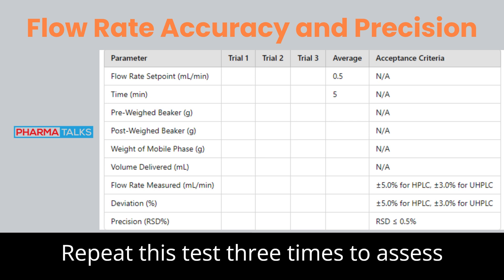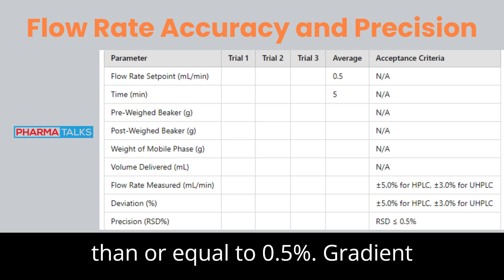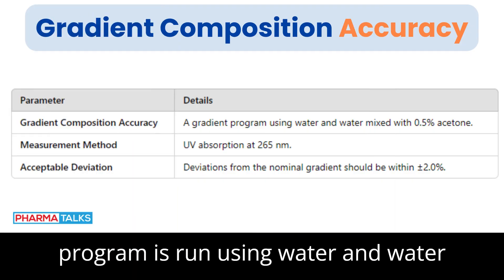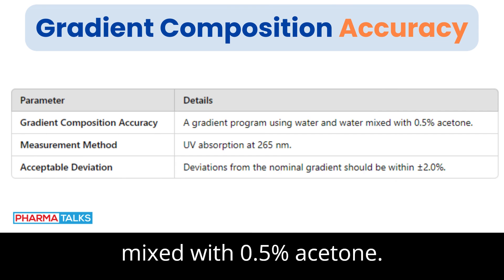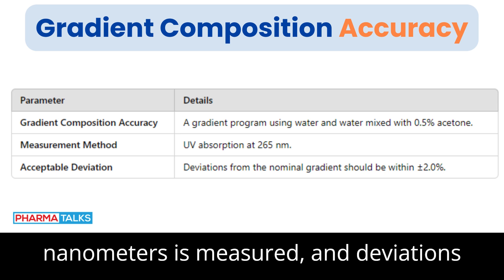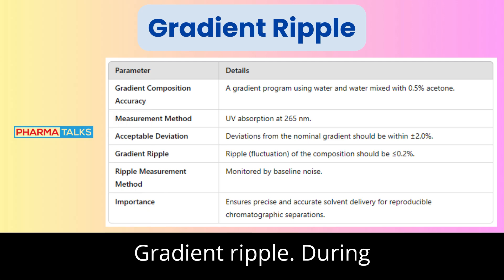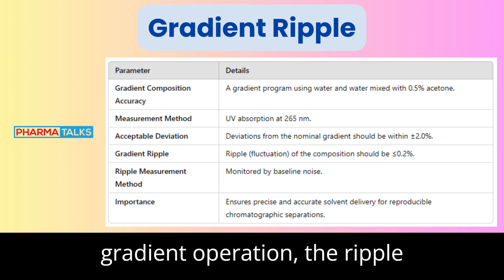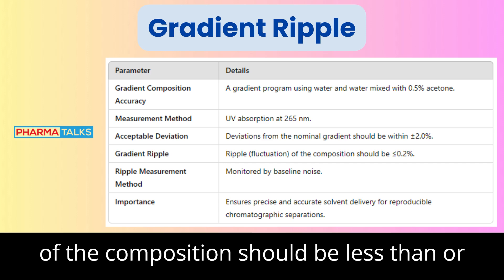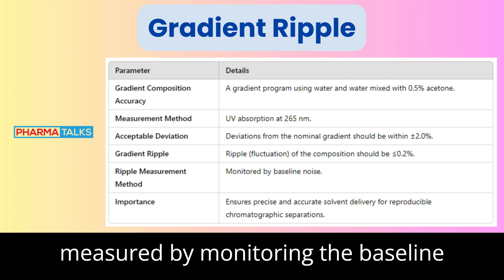Repeat this test three times to assess precision and ensure the relative standard deviation (RSD) is less than or equal to 0.5%. Gradient Composition Accuracy: a gradient program is run using water and water mixed with 0.5% acetone. The UV absorption at 265 nm is measured, and deviations from the nominal gradient should be within ±2.0%. Gradient Ripple: during gradient operation, the ripple fluctuation of the composition should be less than or equal to 0.2%, and can be measured by monitoring the baseline noise.